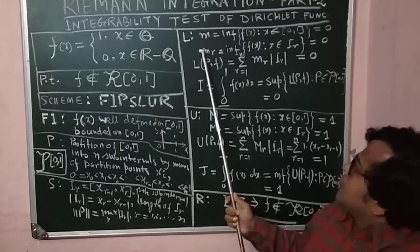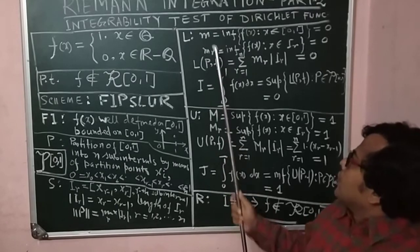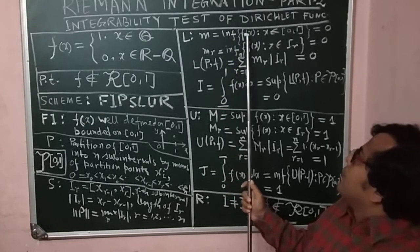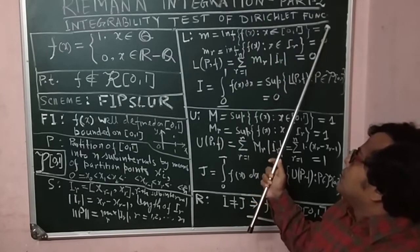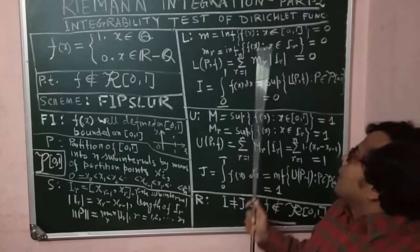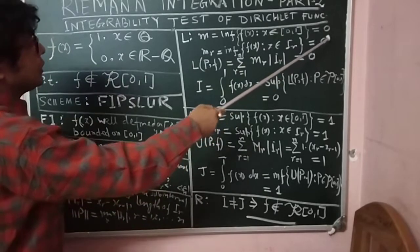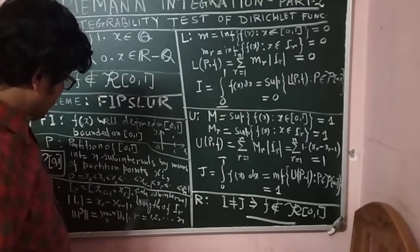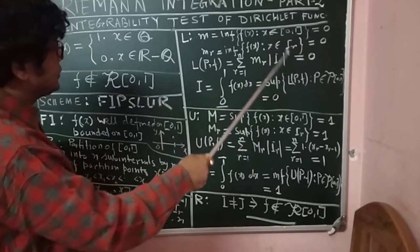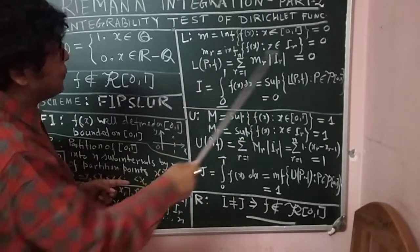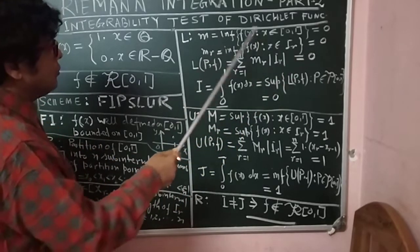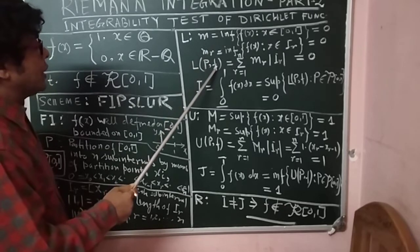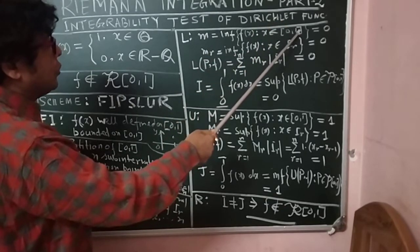What is L? L is the lower part. We define the lower quantities of the Riemann integration. Here m_r equals the infimum of f(x) for x in I_r, which equals 0, since every sub-interval contains both rational and irrational numbers, and we are taking the infimum. So m_r = 0 for all r = 1 to n. The lower sum L(P, f) is the sum from r = 1 to n of m_r times |I_r|, which equals 0.